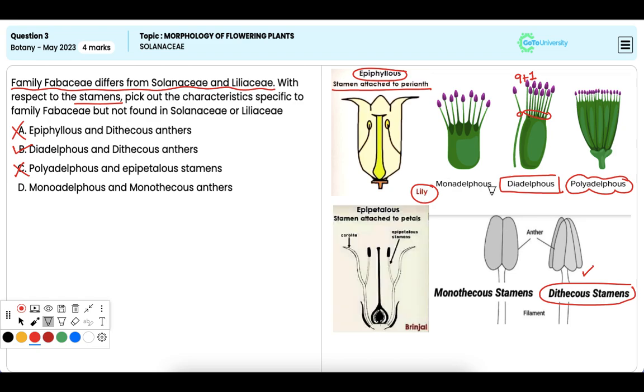Epipetalous stamens, that is attached to the petals, are found in the family Solanaceae.